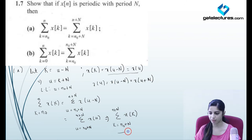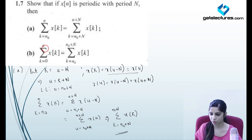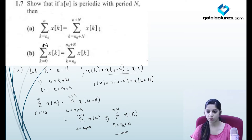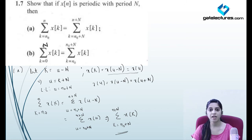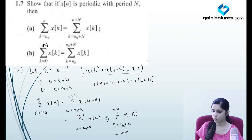Now look at the second part. They're saying the summation of a signal from 0 to N equals — and this is capital N, possibly a misprint — so they're asking that the summation of a signal over its time period, from 0 to capital N, is equal to the summation from n₀ to n₀ plus N. Adding any constant n₀ to both limits does not change the result, which is true logically.